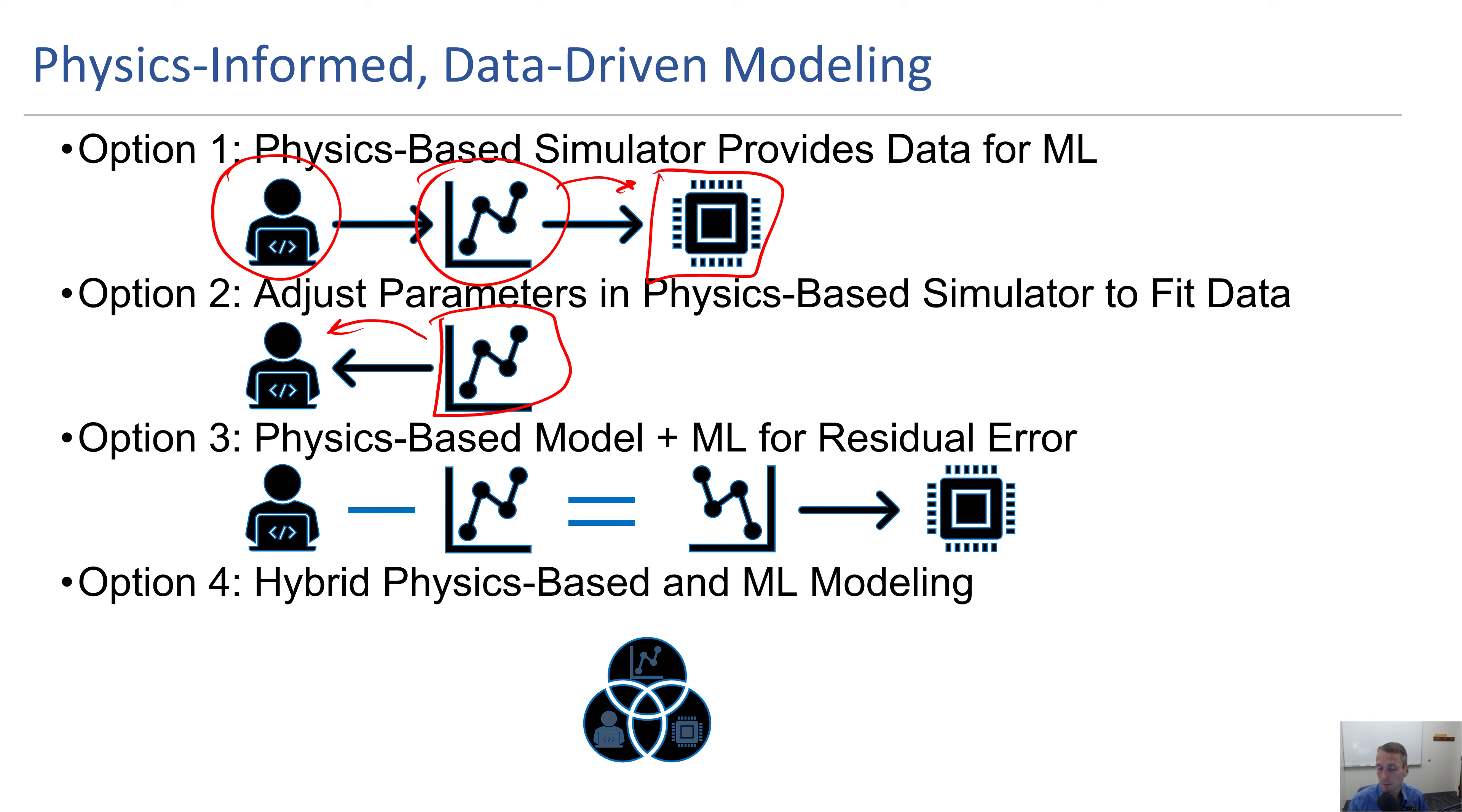We see physics-based simulators that can provide simulations that can be trained by a machine learning algorithm. You can have it go the other way where we take data from a process and update parameters of the physics-based simulator. We can take physics-based simulators and data, subtract those and take a residual and fit that with machine learning. But what can we do to combine these into a single architecture where it isn't either physics-based or empirical methods but where we can combine those.